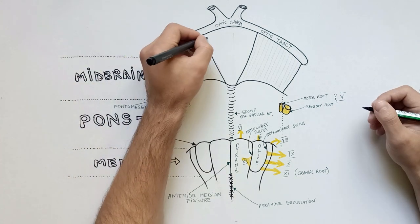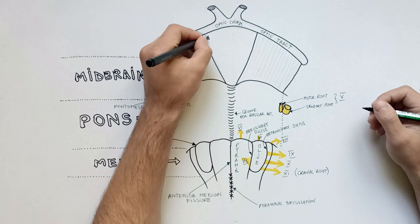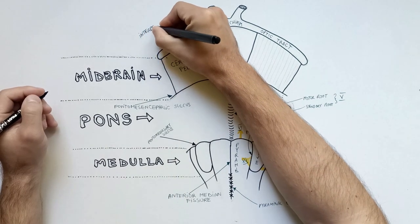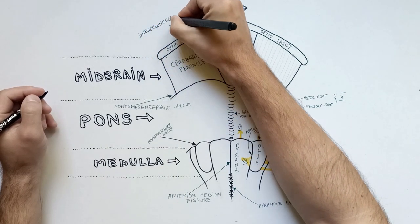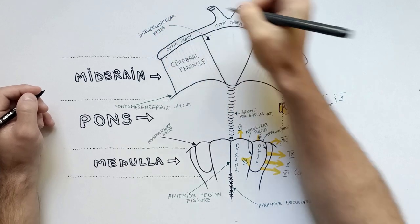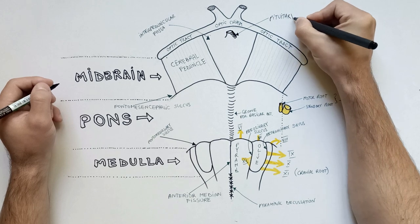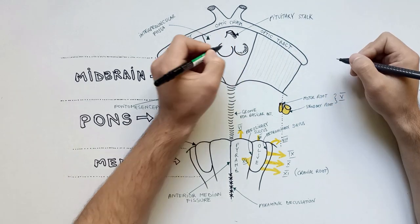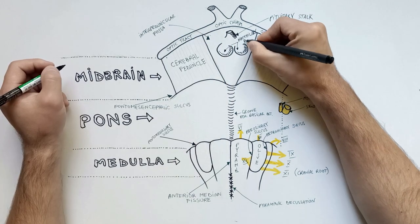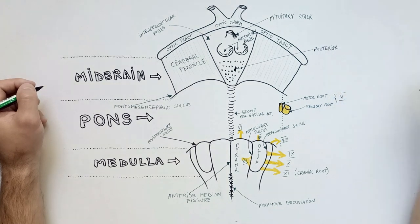Between cerebral peduncles, optic chiasm and optic tracts is present a space called the interpeduncular fossa. At this level from above downward we find the pituitary stalk, the two mammillary bodies, and the posterior perforated substance.